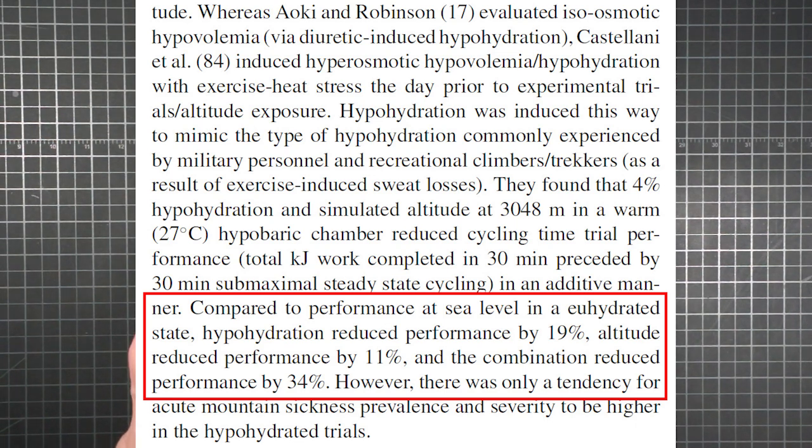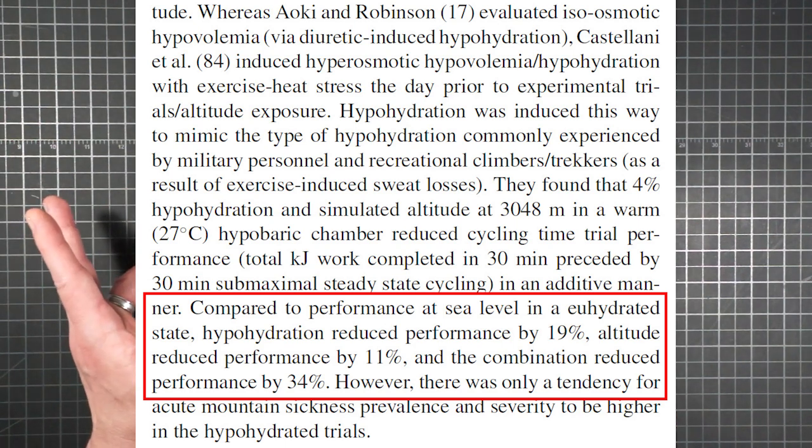And lastly, OptiComp notes that performance loss from altitude exposure is additive to that from dehydration. Compared to hydrated cyclists at sea level, hypo-hydrated subjects at simulated altitude experienced a 34% reduction in performance. 11% was from the altitude itself, while an additional 19% came from being simultaneously low on water, with the combined hazards actually adding up to more than the individual handicaps.